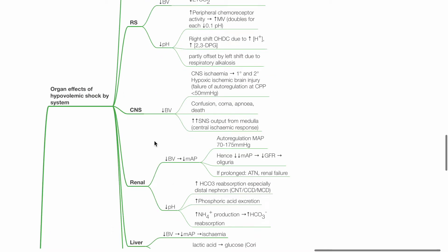For the CNS, reduced blood volume results in CNS ischemia, primary and secondary hypoxic ischemic brain injury. There is failure of autoregulation at CPP less than 50 mmHg. Presentation may include confusion, coma, apnea and death. There is increased sympathetic output from the medulla due to central ischemic response.